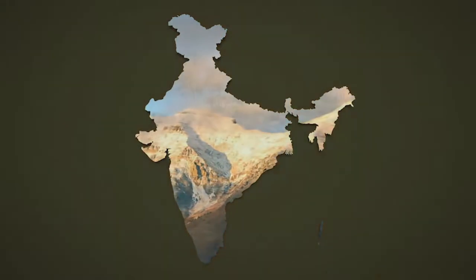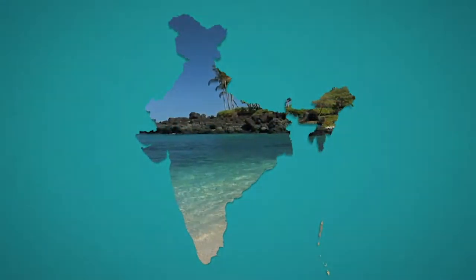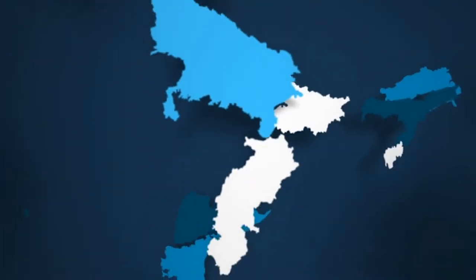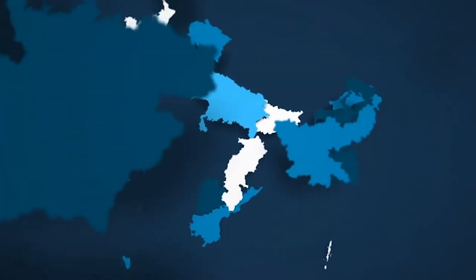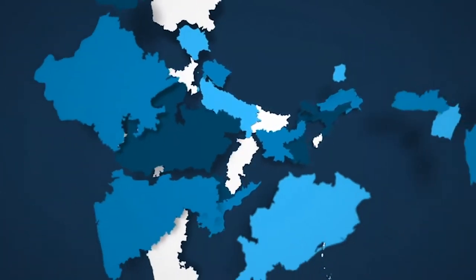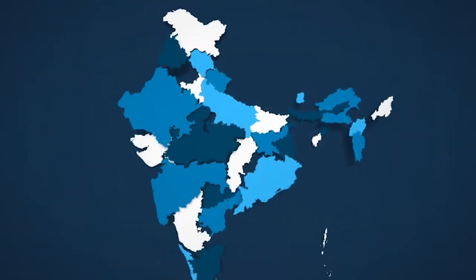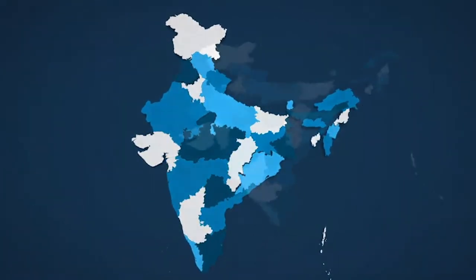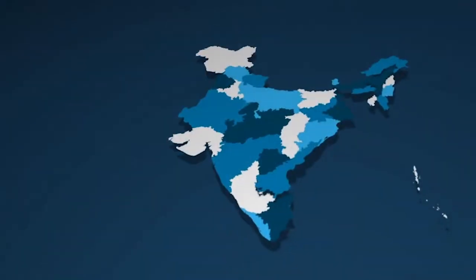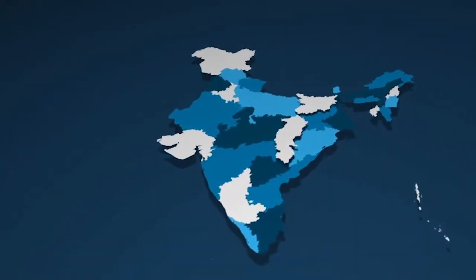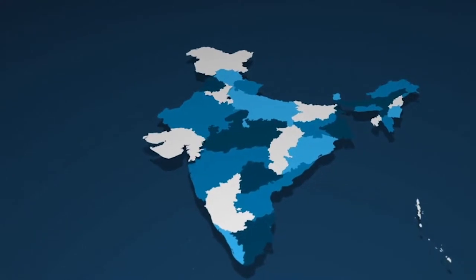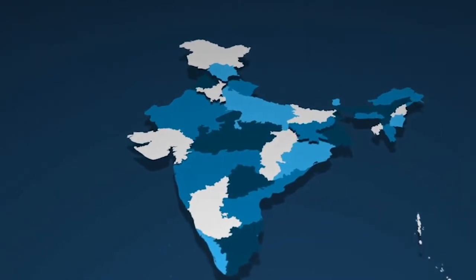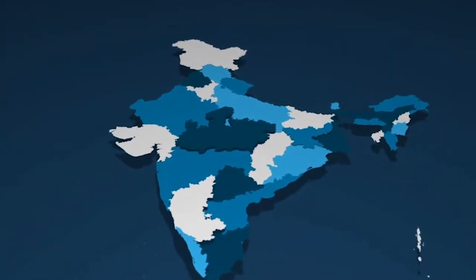images, footage, whatever you need. Highlight states with different colors to represent whatever you need the map to represent. Or get creative and add your own animations and images into the texture layers.